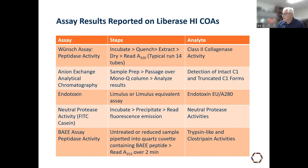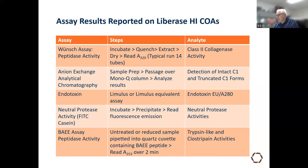We used the anion exchange method to detect intact Class 1 collagenase C1 from truncated C1 forms. At the time of LIBERASE HI, we didn't know collagenase had endotoxins, so we used the Limulus test. For neutral protease activity, we used an assay from Twining using FITC-casein: incubate with enzyme, precipitate with TCA, and read fluorescence emission. The BAE assay is a typical trypsin assay measuring trypsin-like and Clostripain activity.